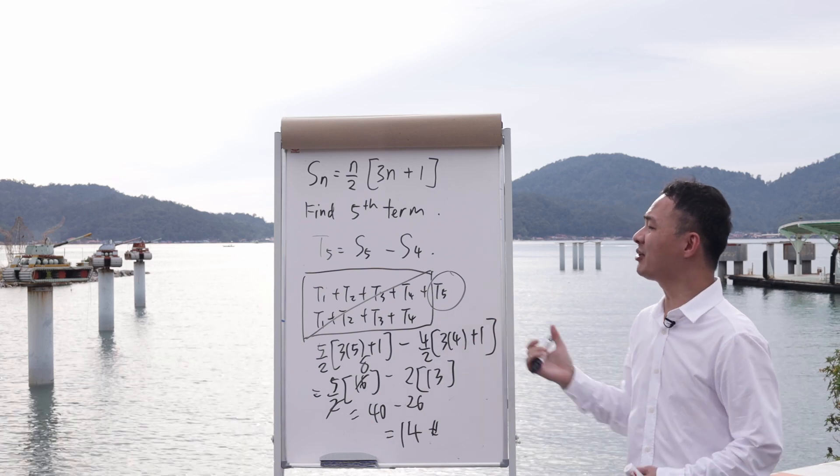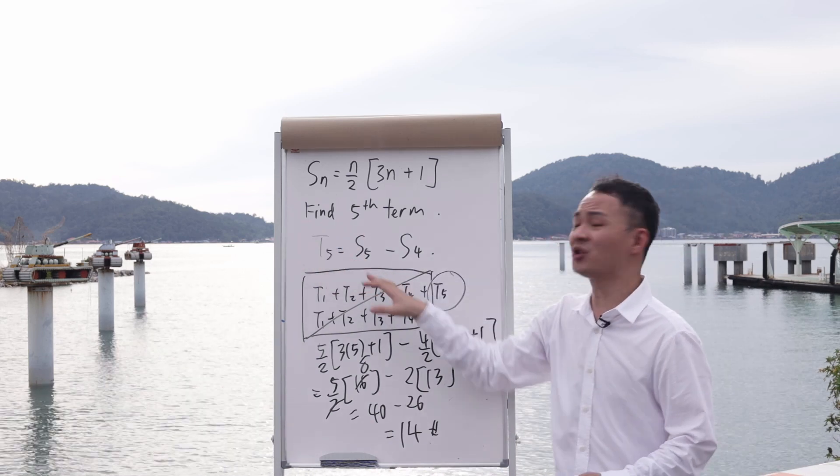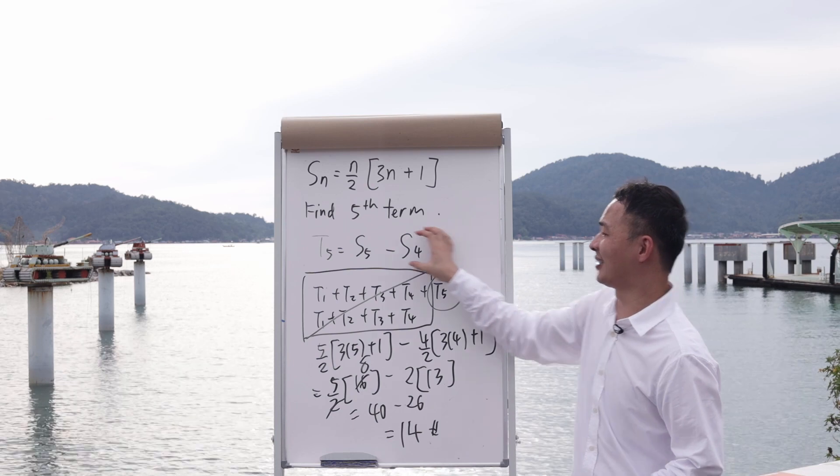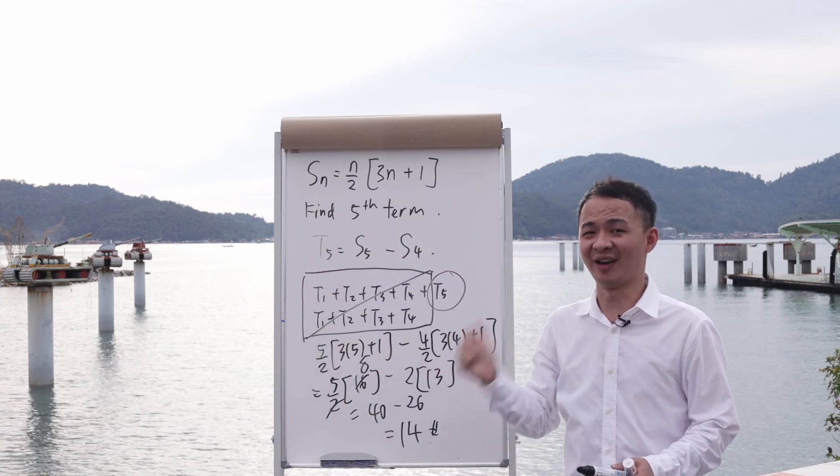The important concept here is that t5 equals s5 minus s4. Make sure you understand this concept - this kind of question will be very easy for you.